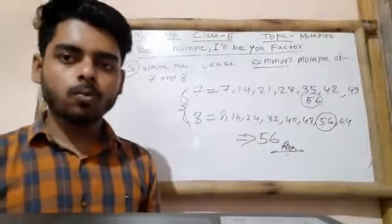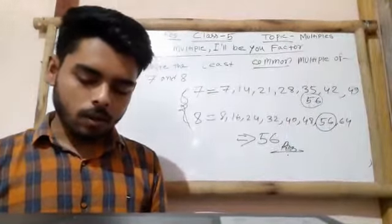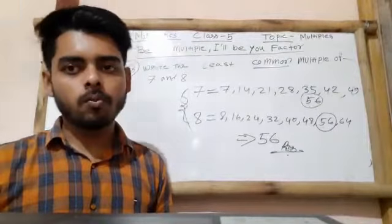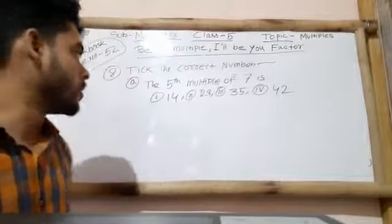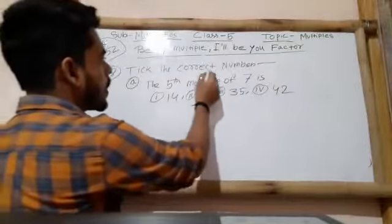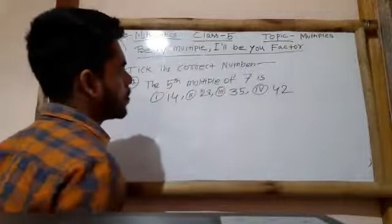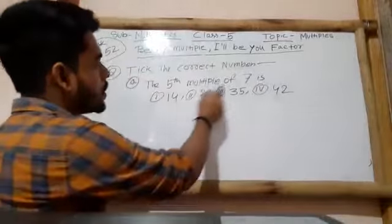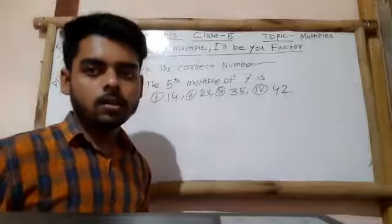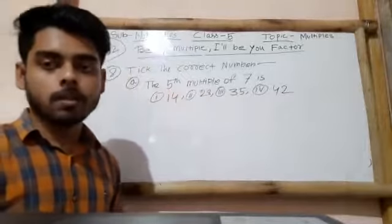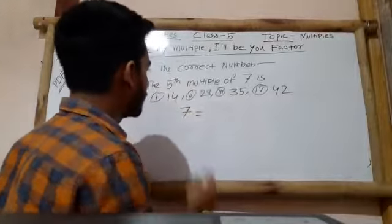We will discuss a few more questions in this class, and in the next class I will give you some questions as homework. The next question is: find the correct number — the fifth multiple of 7. There are options given. Let's see how to find the fifth multiple of 7. First of all, write 7 and find its fifth multiple.